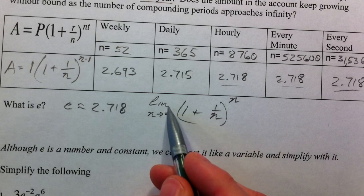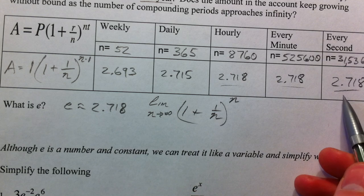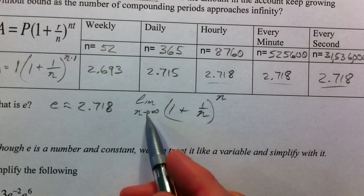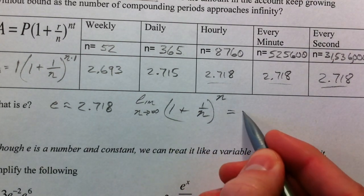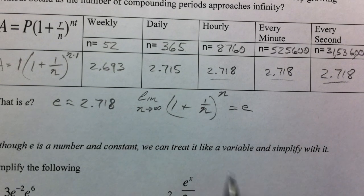So the number that we're getting closer and closer to, the number that we're never going to actually touch but we're going to get close to, as N goes to infinity, is E. That's how E is defined, by this.